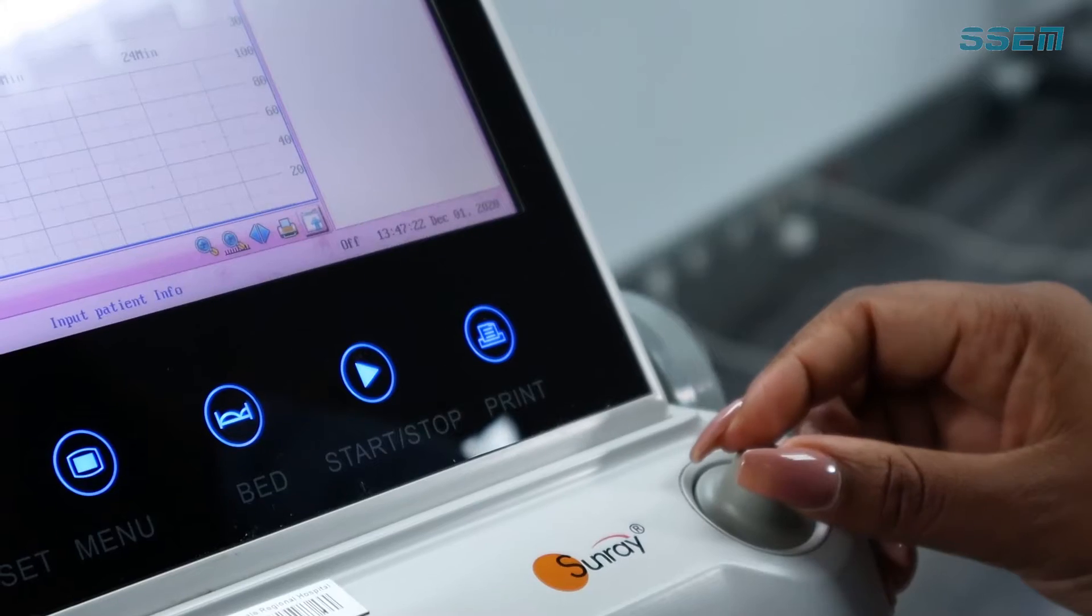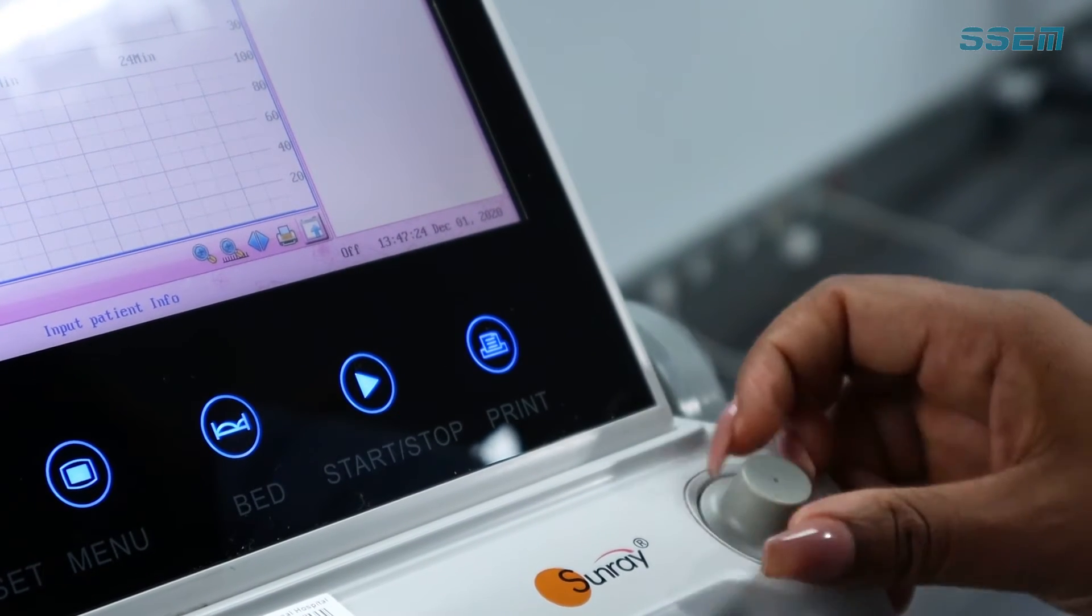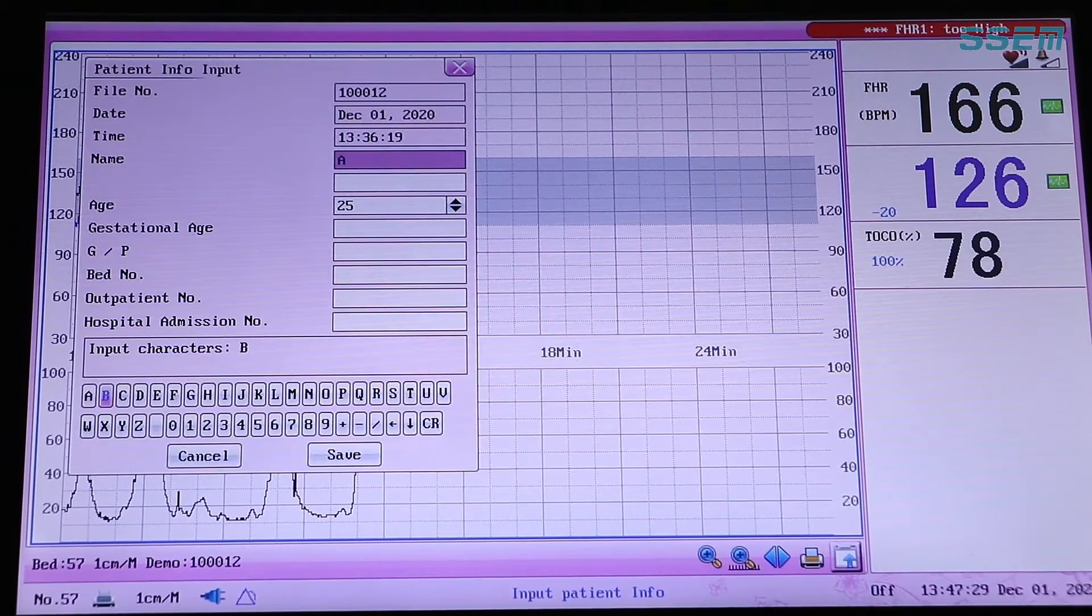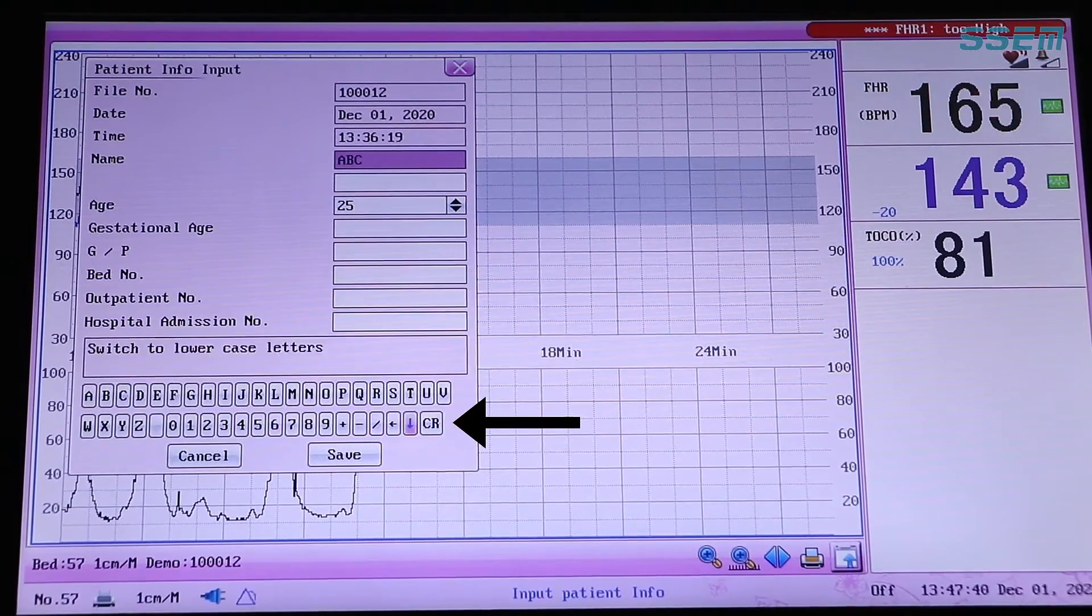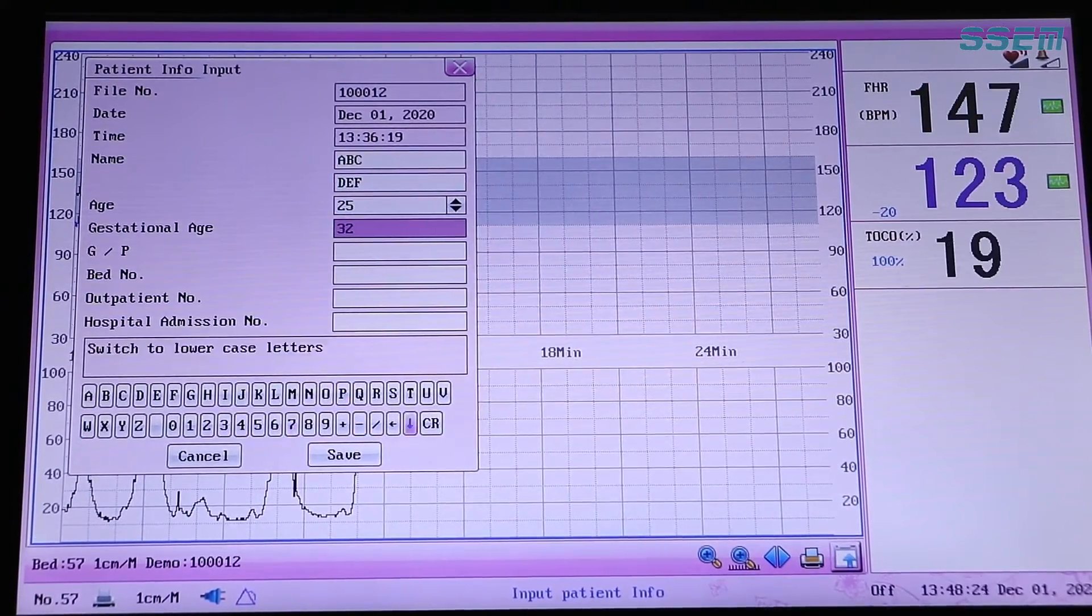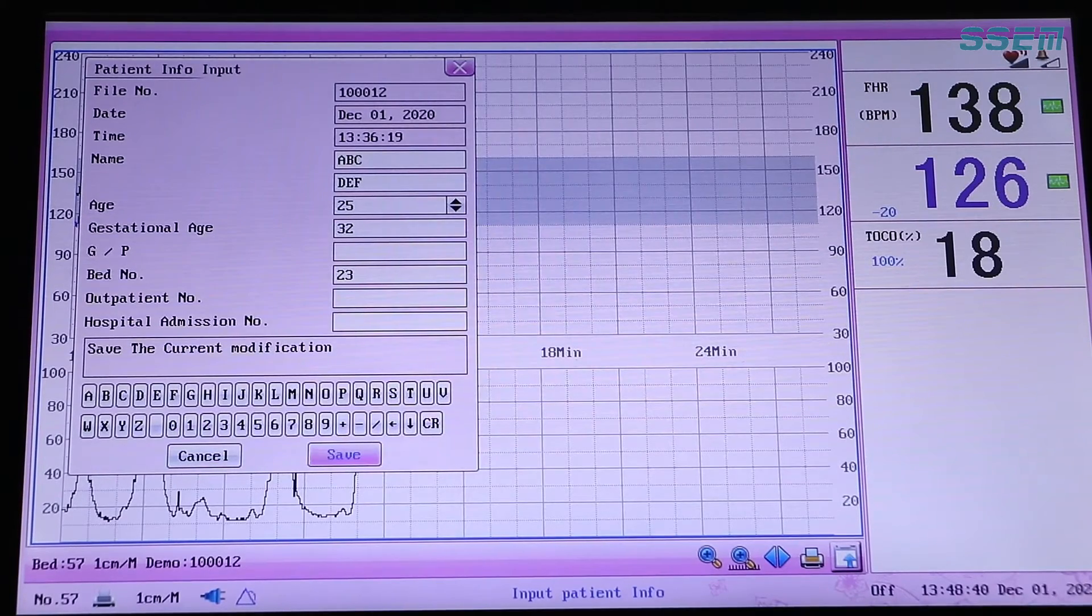Using the control knob rotate it to the name field and select. Automatically the keypad will be selected to type the patient name. Select CR to move to the next field. Continue this till you have completed the file and select save.